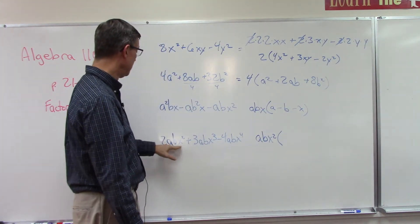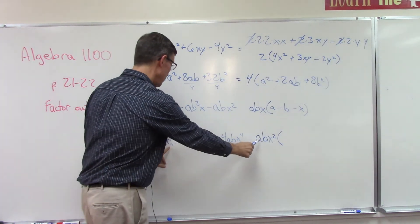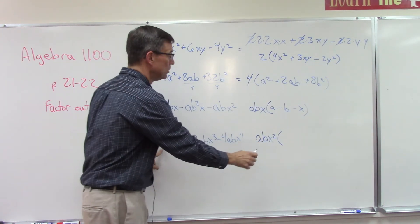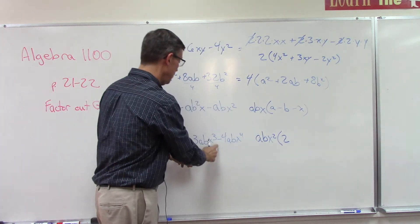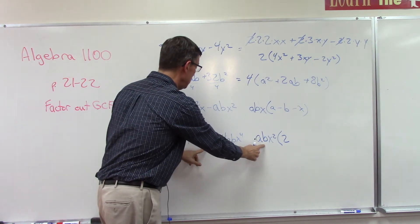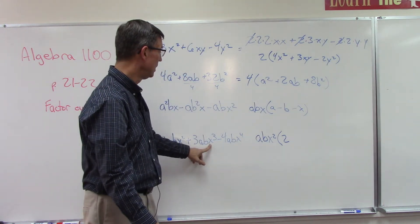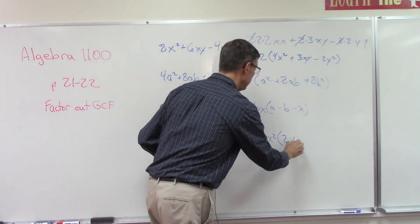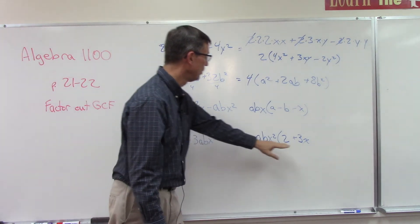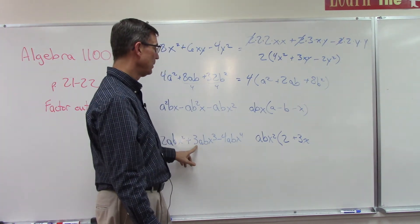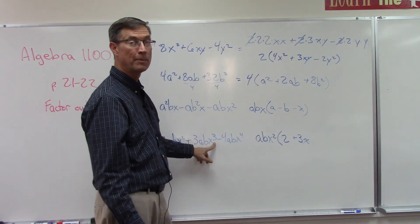Let's check: what do I multiply times abx² to get 2abx²? All that's missing is the 2 out front. Now what's missing to get from abx² to 3abx³? I have the a, I have the b, I have x squared — here I have x cubed, so I need to keep the 3 and keep the extra x. Let's check: 3x times abx² gives 3ab times x³ — yes, x squared times x gives x cubed.